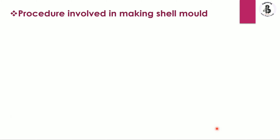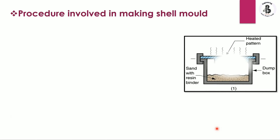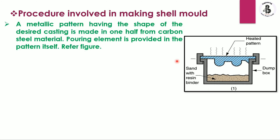Now we will see the different steps involved in making a shell mold. The basic figures show a dump box filled with sand and a resin binder. A basic metallic pattern having the shape of the desired casting is made in one half from carbon steel material.